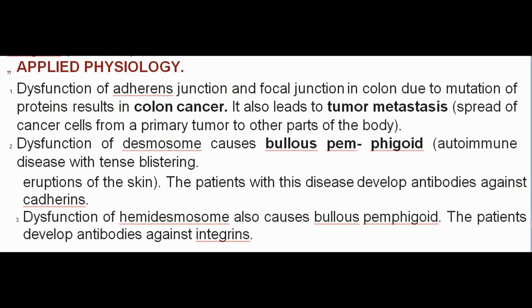Applied physiology: Dysfunction of adherence junction and focal junction in the colon due to mutation of proteins results in colon cancer. It also leads to tumor metastasis — spread of cancer cells from a primary tumor to other parts of the body. Dysfunction of desmosome causes bullous pemphigoid, an autoimmune disease with tense blistering eruptions of the skin; patients develop antibodies against cadherins. Dysfunction of hemidesmosome also causes bullous pemphigoid, with patients developing antibodies against integrins.